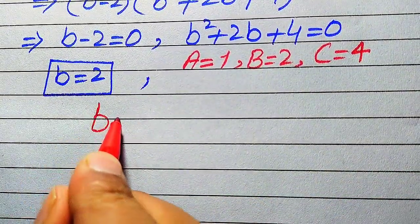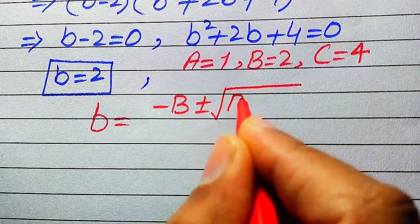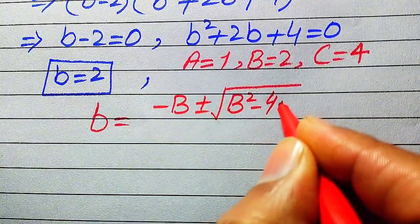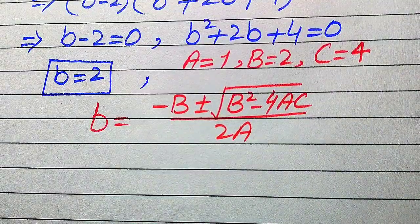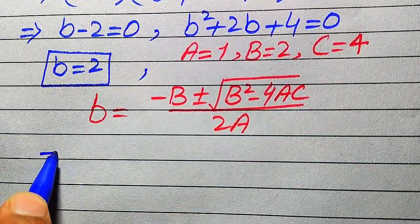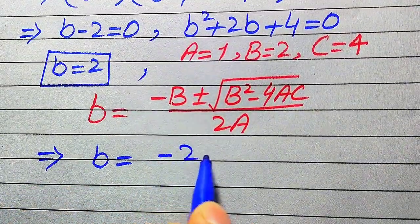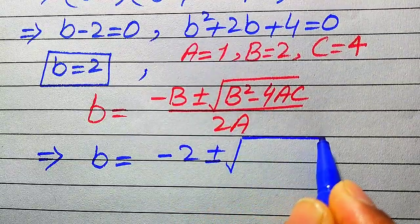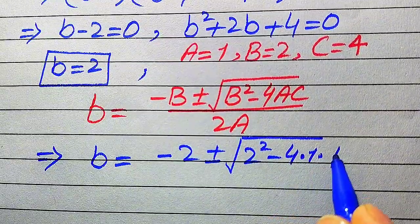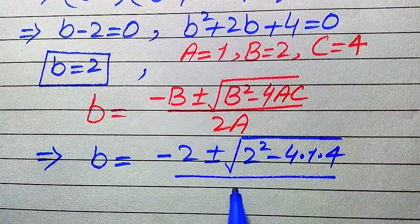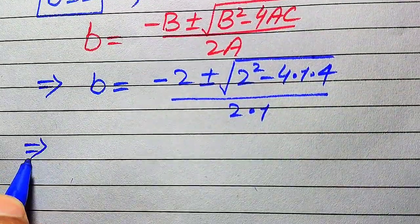We state the quadratic formula as: small b equals minus B plus or minus square root of B squared minus 4AC, divided by 2A. Now we substitute: b equals minus 2 plus or minus square root of 2 squared minus 4 times 1 times 4, divided by 2 times 1.